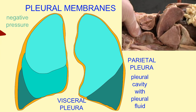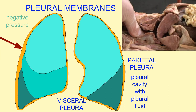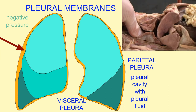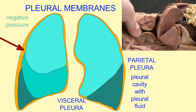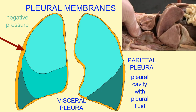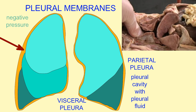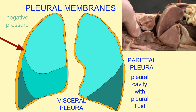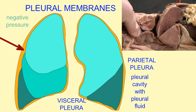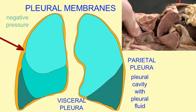The space of the pleural cavity has a pressure which is slightly less than atmospheric pressure, and this negative pressure is required so that the air sacs or alveoli are adequately inflated.